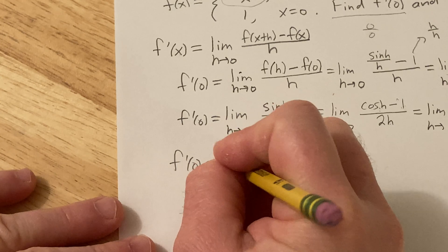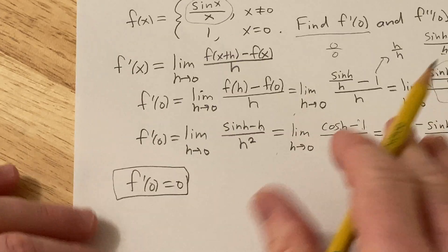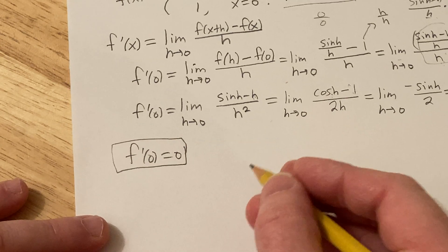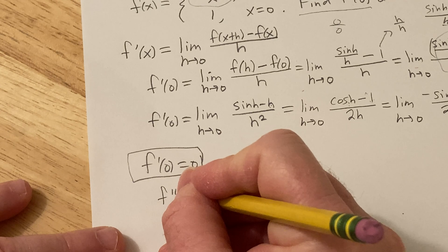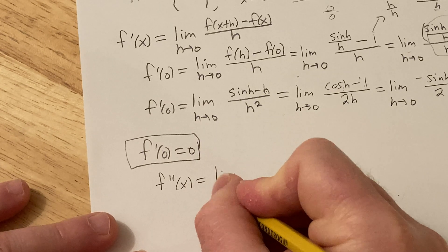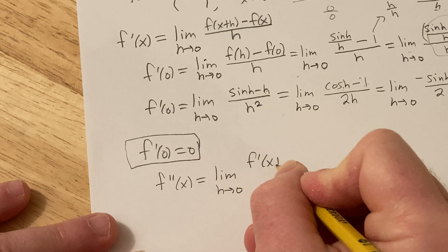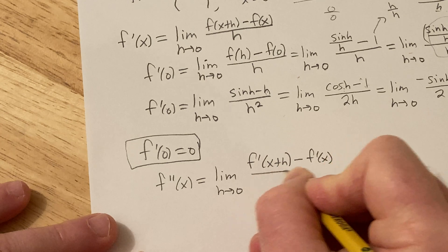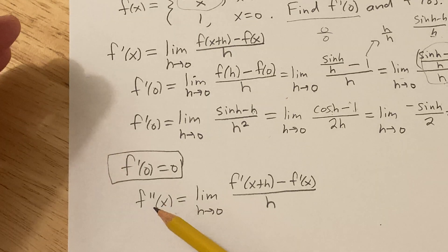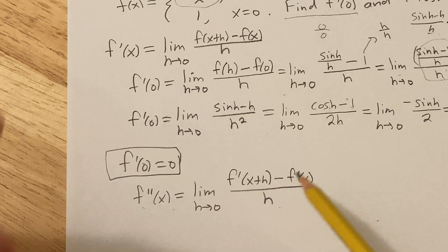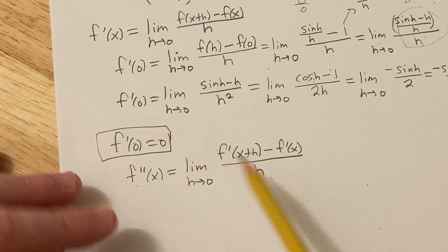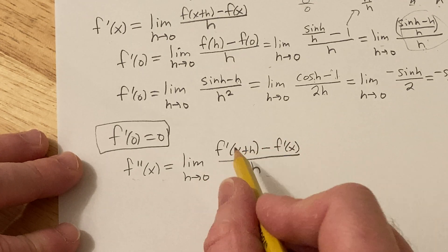The first derivative at zero is equal to zero. We're only halfway done, so we still have to find the second derivative at zero. The second derivative of f at x is the limit as h approaches zero of f prime of x plus h minus f prime of x over h — basically using this definition but for the second derivative. The second derivative is the derivative of the first derivative, so you just replace f with f prime. Now let's go ahead and replace x with zero.